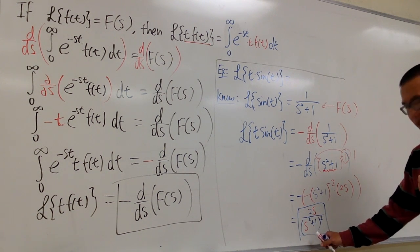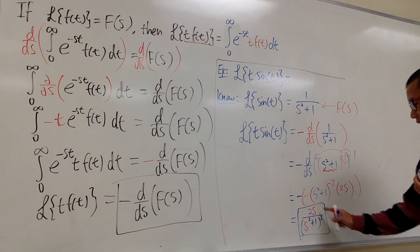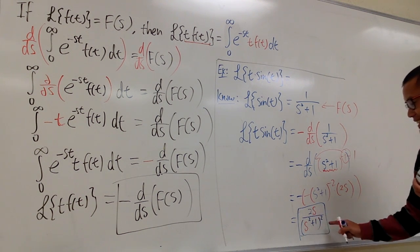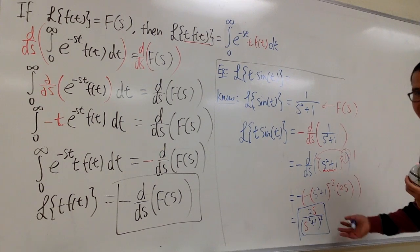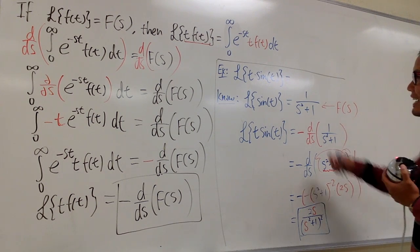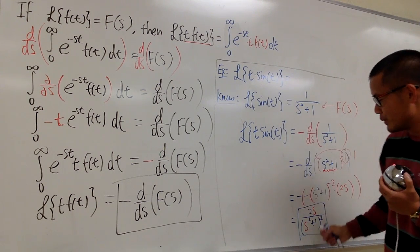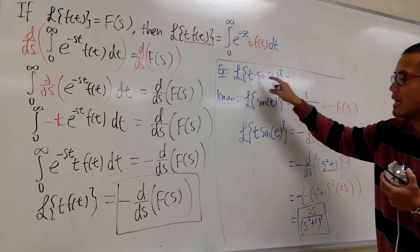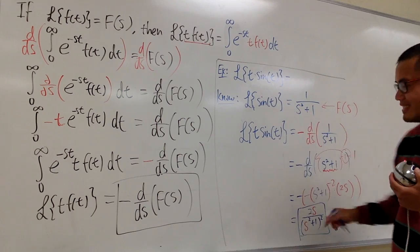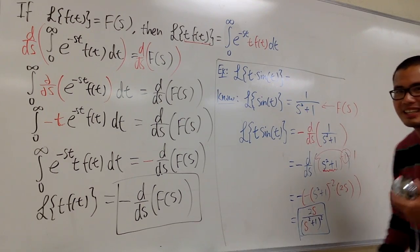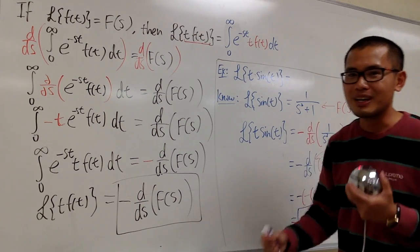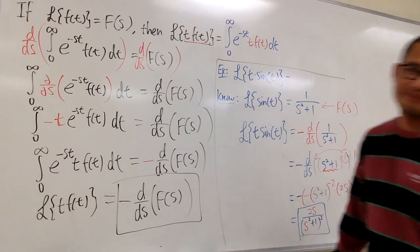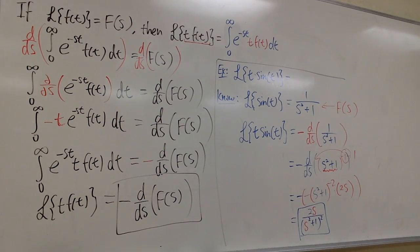So the final answer is 2s over (s²+1)². That's how we do the Laplace transform of t times whatever — just use this formula. It's so cool; you can handle all of that with just one formula.